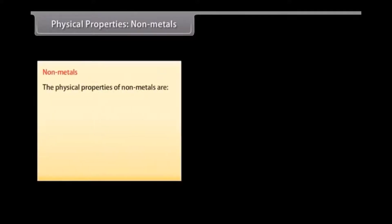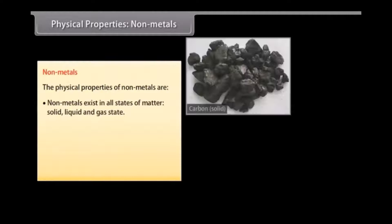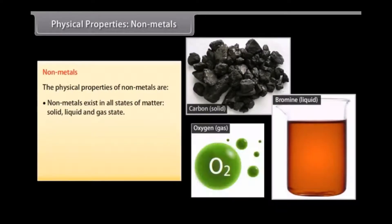Physical properties: Non-metals. Let us now look at the physical properties of non-metals. Physical state: Non-metals exist as solid, liquid or gases in state at room temperature. Gas: oxygen, chlorine, fluorine. Liquid: bromine. Solid: carbon.